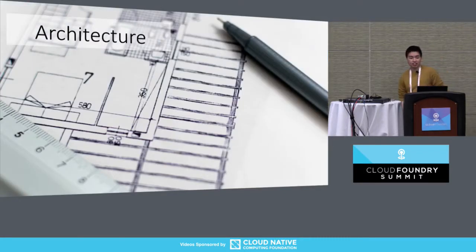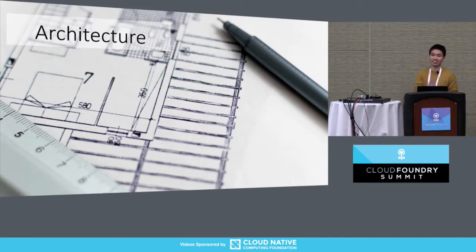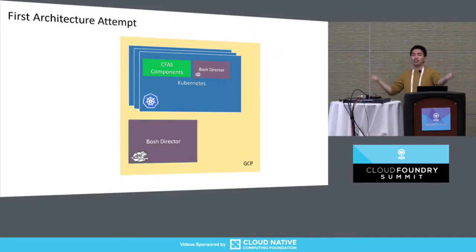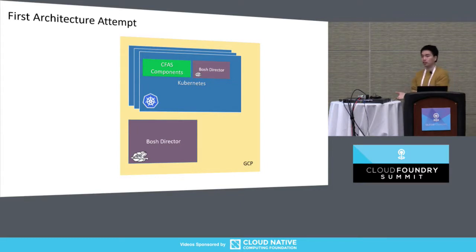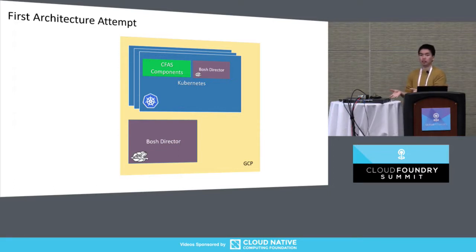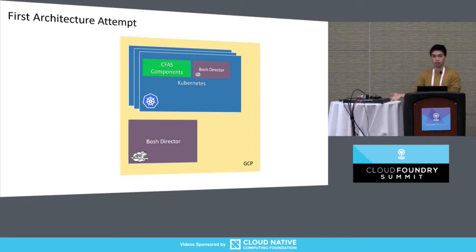So let's come to the architecture slide. The initial imagination is pretty simple: I just deploy a BOSH director in my IaaS, which is GCP, then deploy the Kubernetes cluster, and deploy another BOSH director on the Kubernetes cluster to deploy CF components. It looks pretty simple.